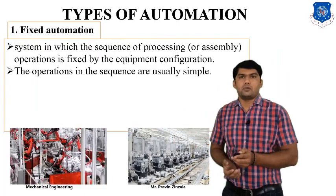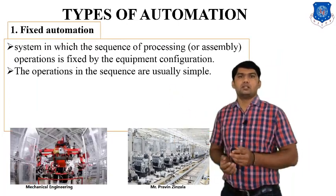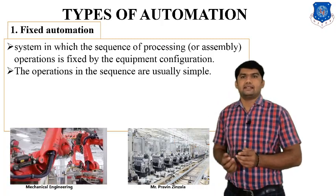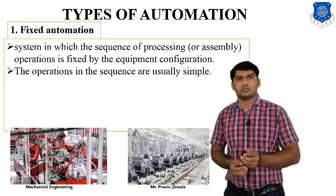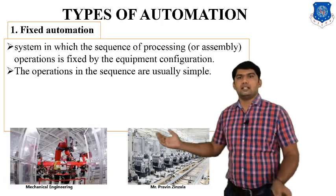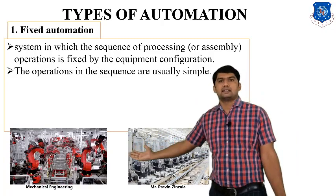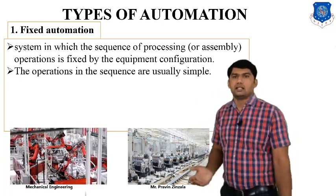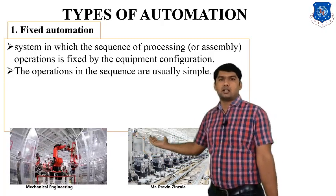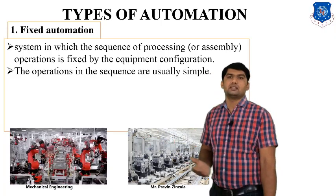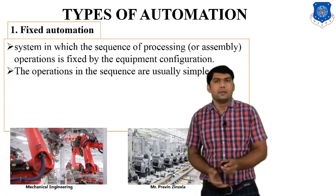The first type of automation is fixed automation — a system in which the sequence of processing or assembly operations is fixed by the equipment configuration, meaning the output is fixed. An example is the automobile sector, where the assembly line sequence is fixed: first car, second car, third car. The sequence remains fixed throughout production, which is why it is called fixed automation.